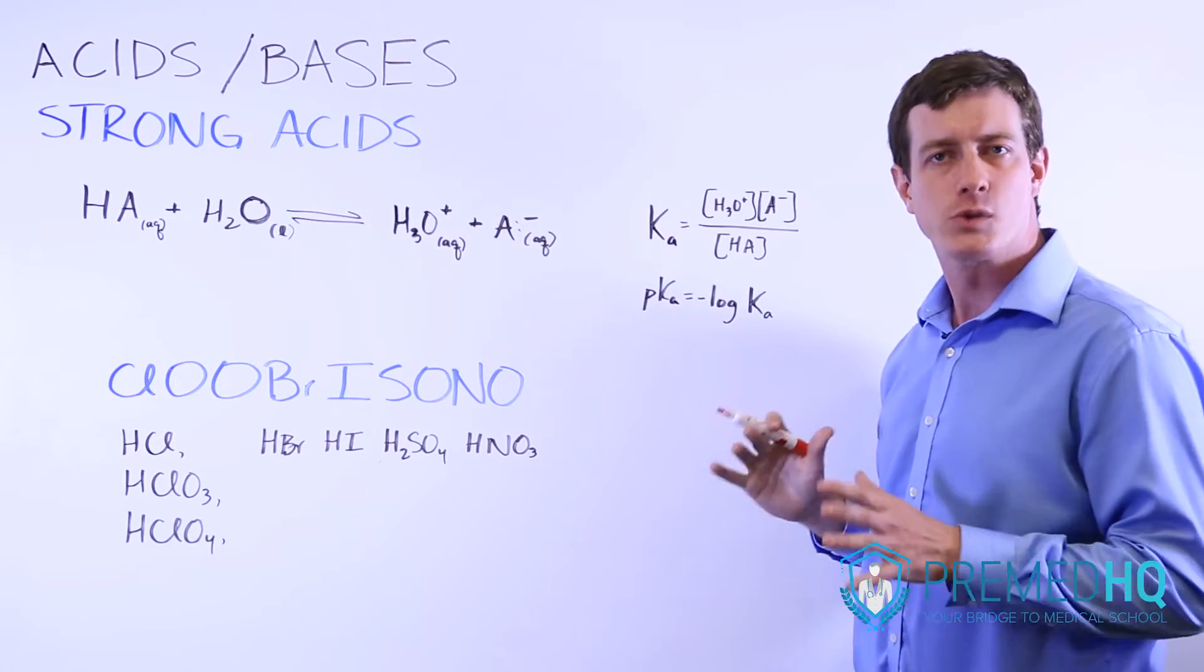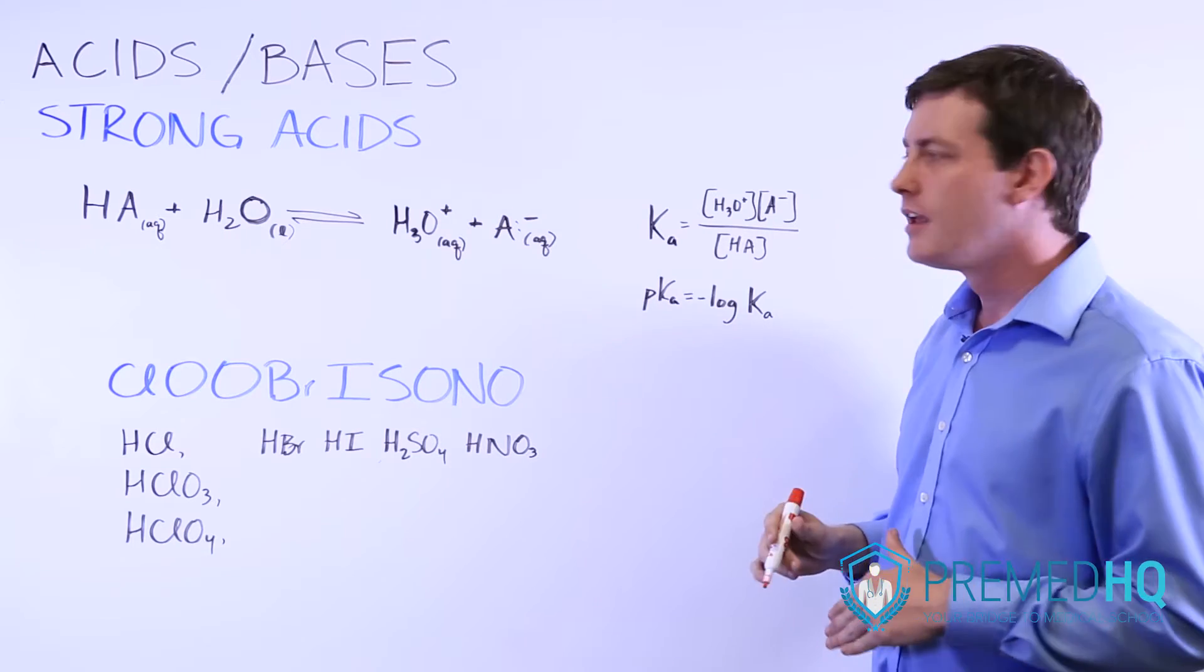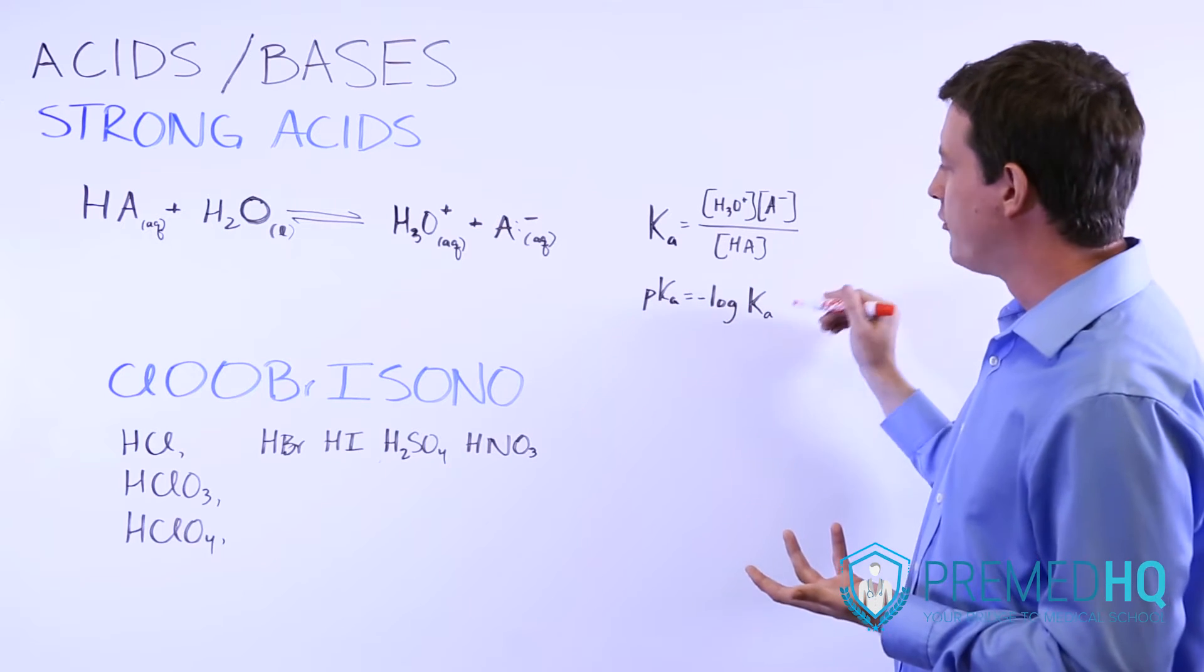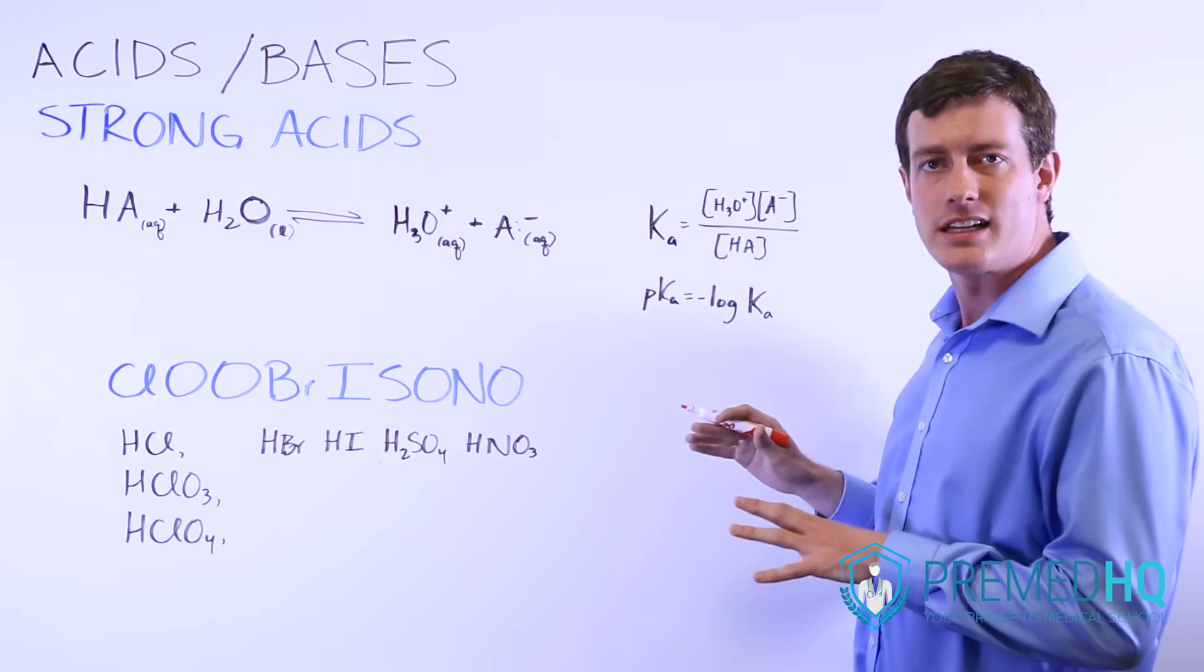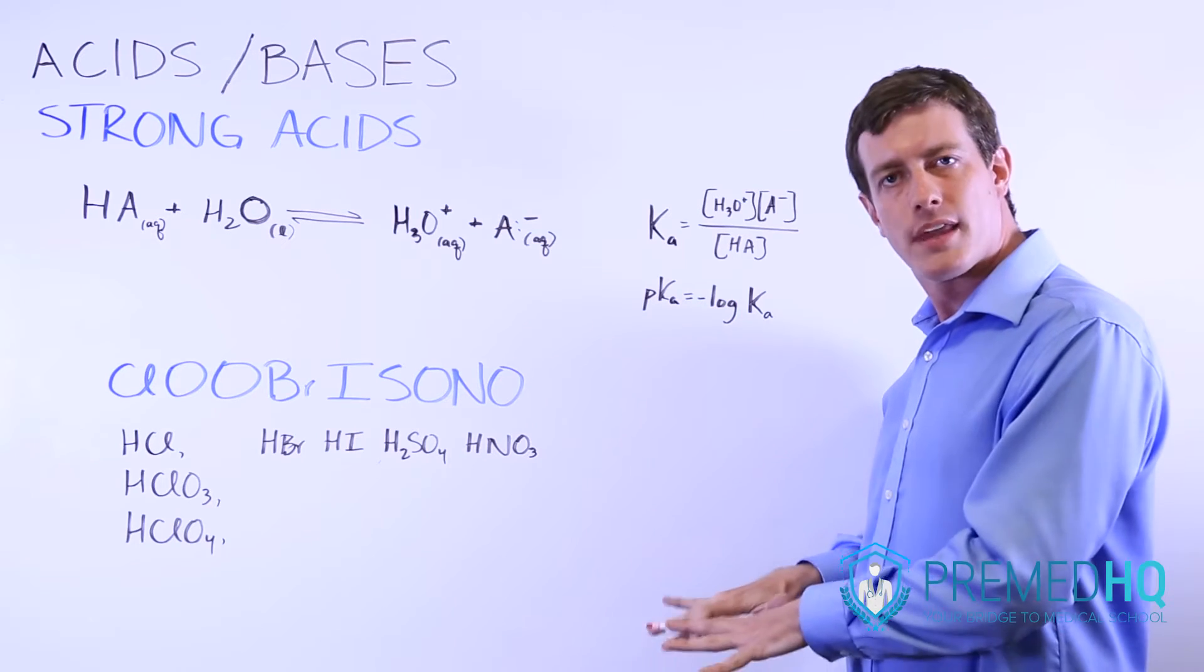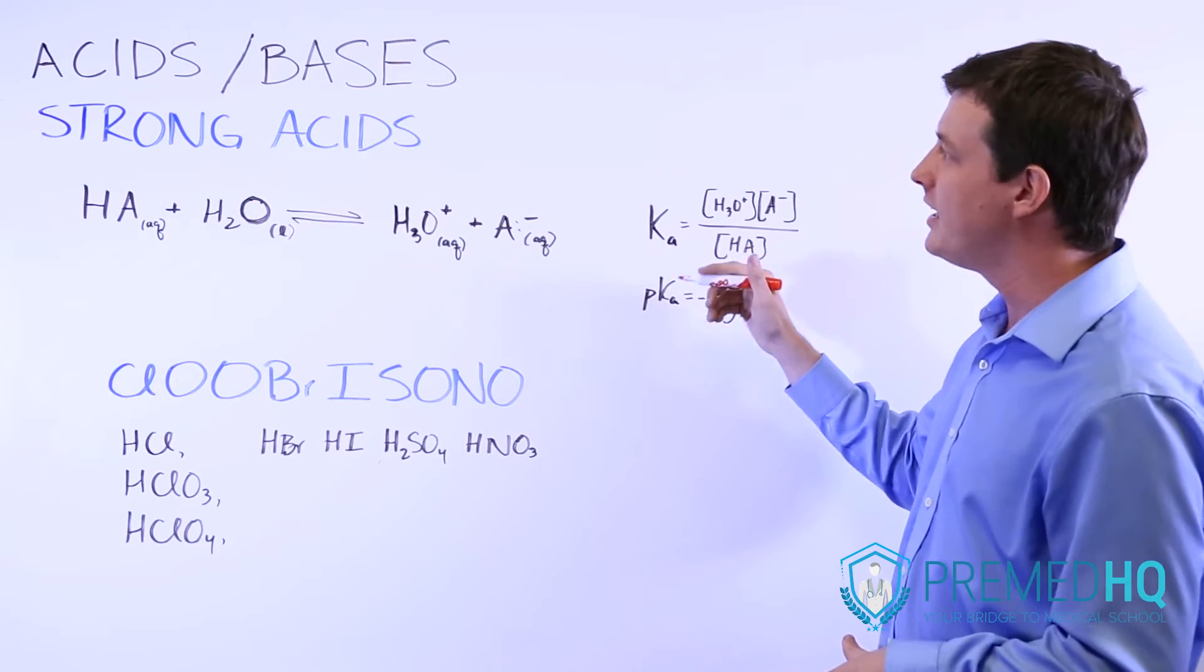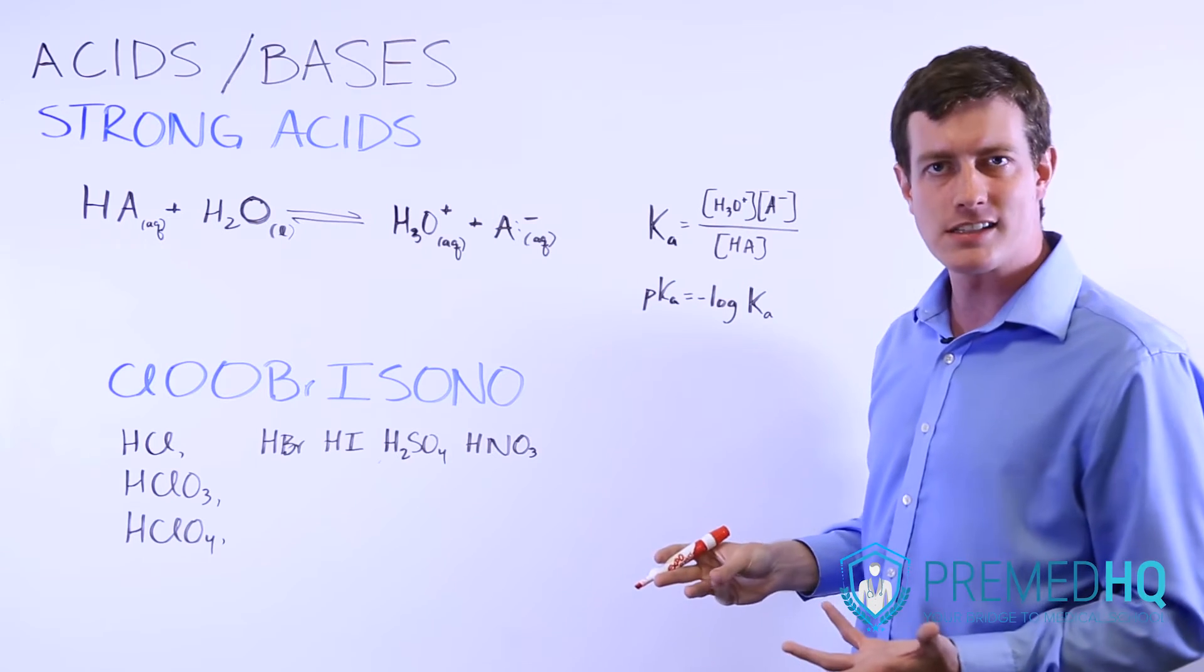So a high Ka is one way that you can measure whether an acid is strong or not. To get from Ka to pKa, you simply take the negative log of Ka. And the general rule is whenever you have a P of anything, if that number is low, then that's a strong member of that species. So a high Ka is a strong acid, and a low pKa is also a strong acid.